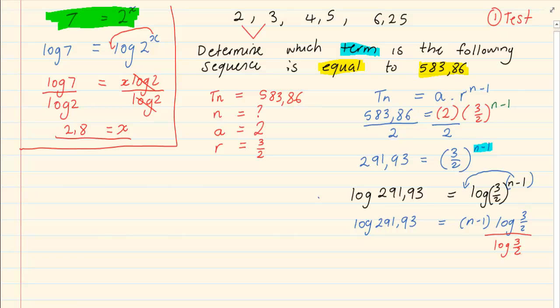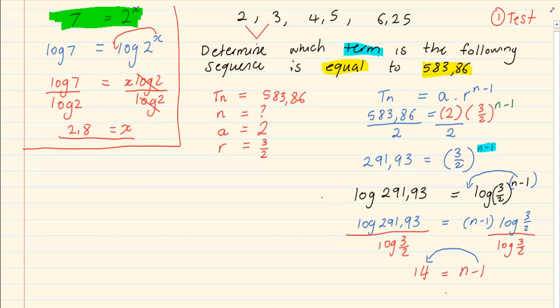So we can get our unknown alone. Divide by log 3 over 2. And we now have that n minus 1 is equal to 14. But we don't want n minus 1, we want n. So using your solve for x rules, we are going to bring our 1 over and then we have n is equal to 15.